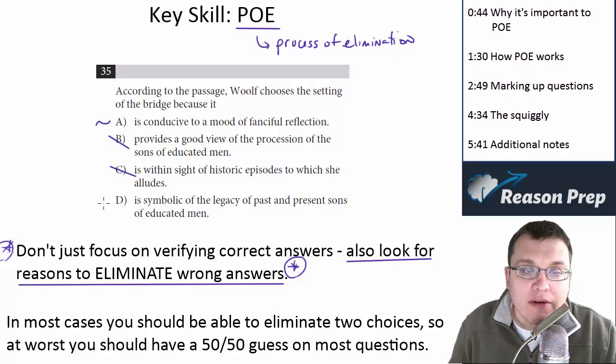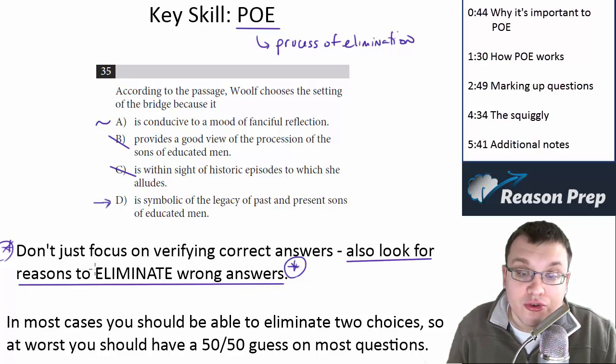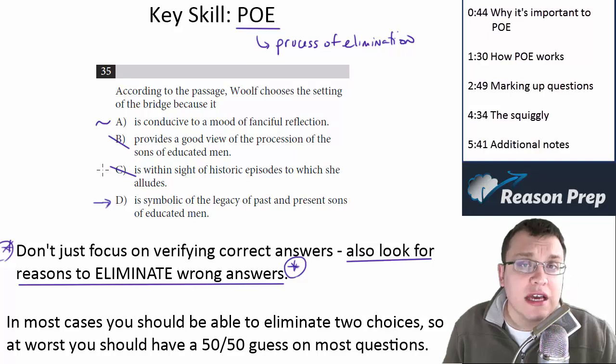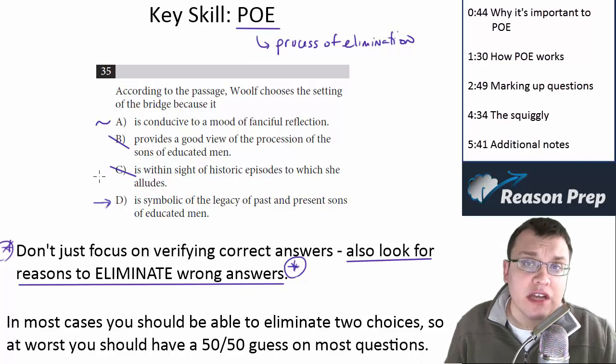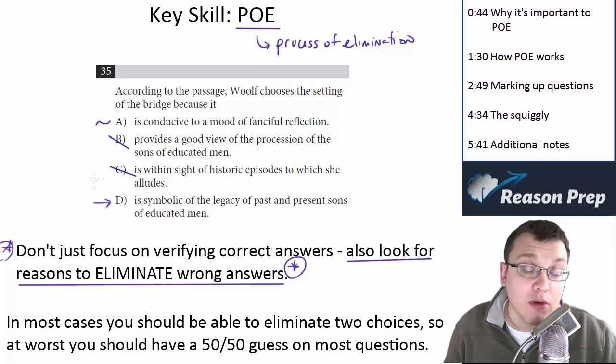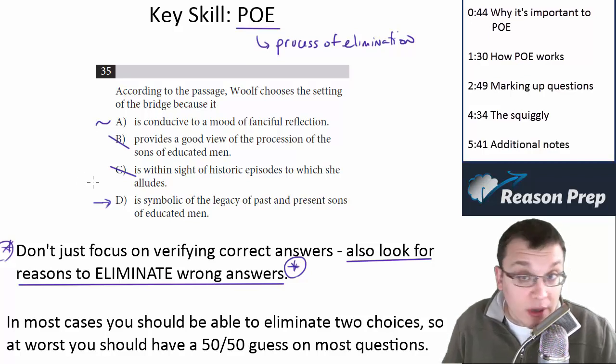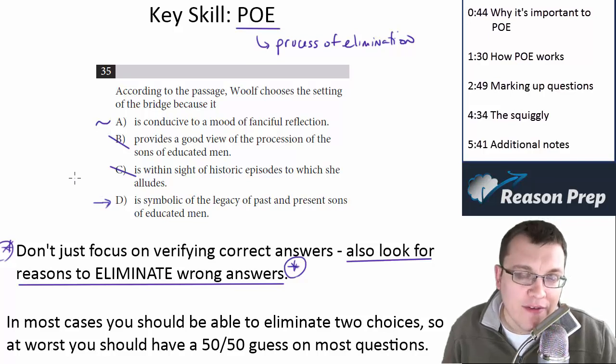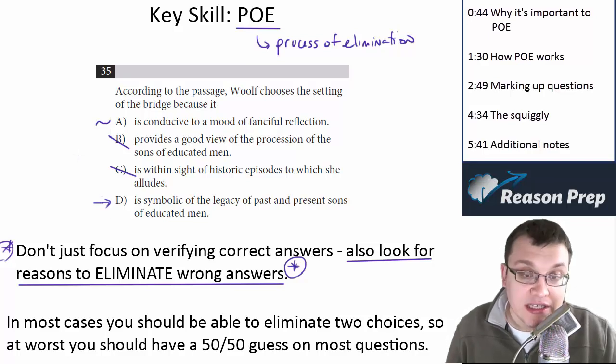If though you get rid of B, you get rid of C, and you think D might work, well, now you've got to choose between these two choices. And in most cases, you should be able to eliminate two choices rather easily. So really in most cases, the worst case scenario for you is going to be a 50-50 guess on most questions. Now, of course, we're going to try to get to a choice on all questions, but most of the time you should be able to get down to a 50-50. And we'll talk more about how to evaluate getting stuck between two choices in a second.